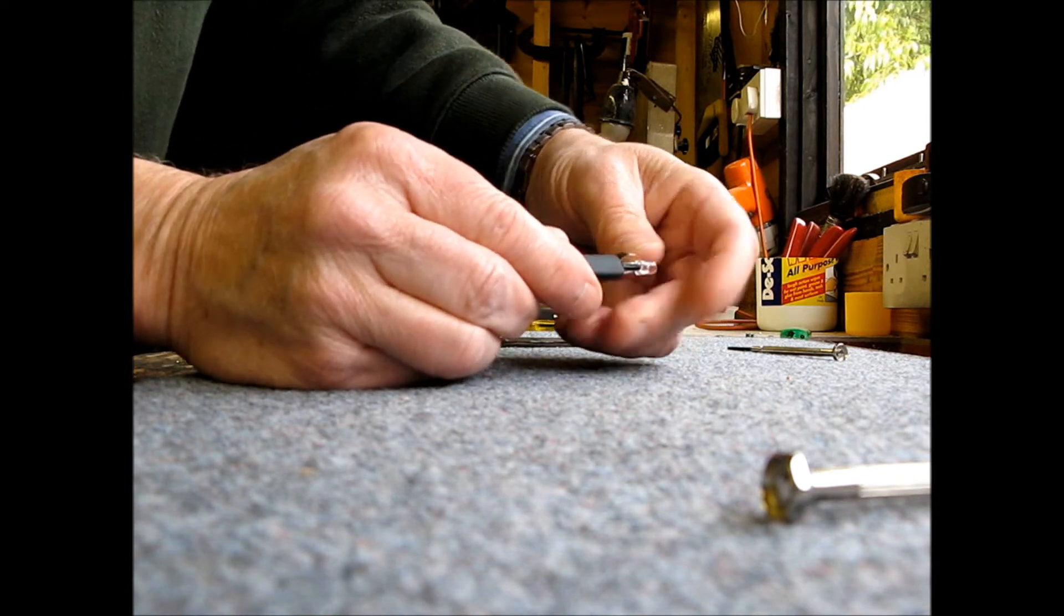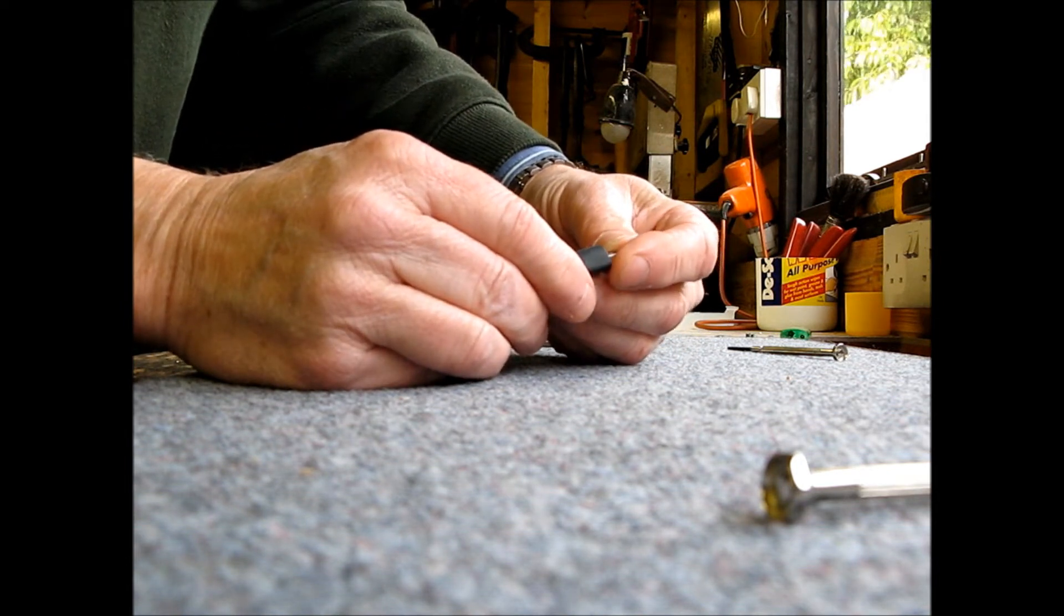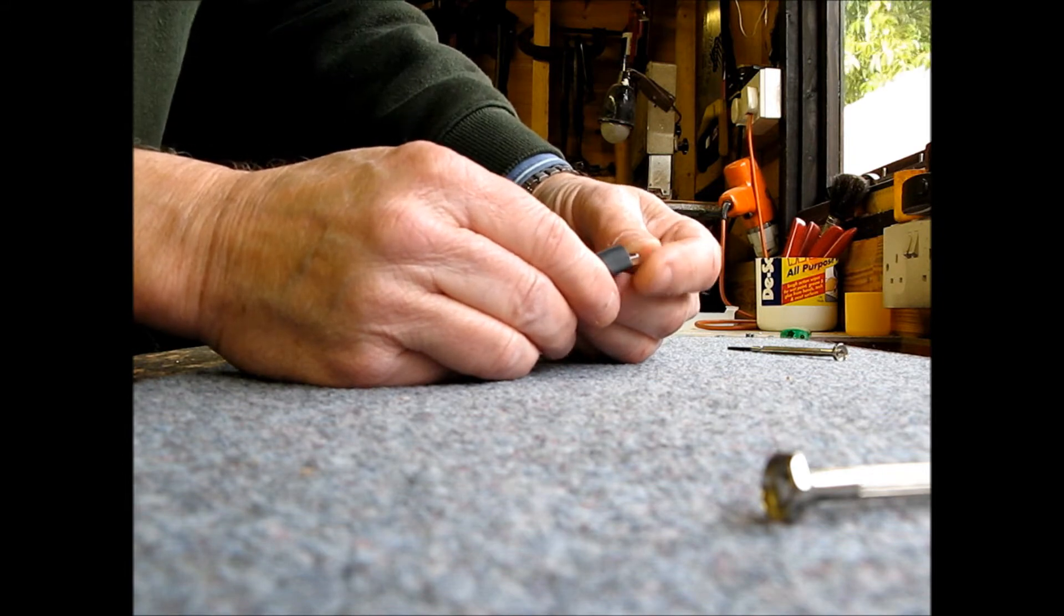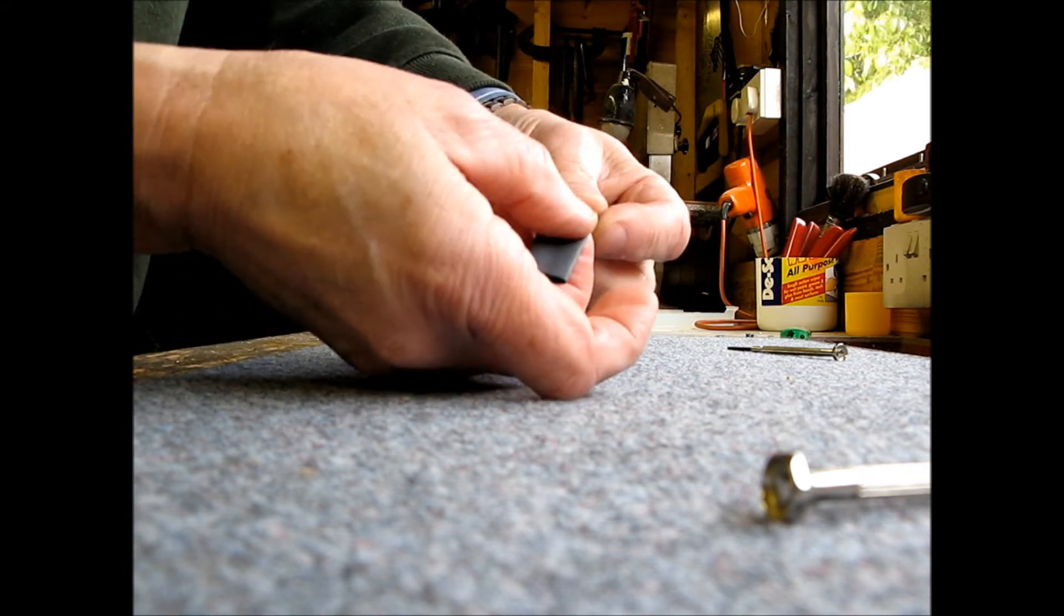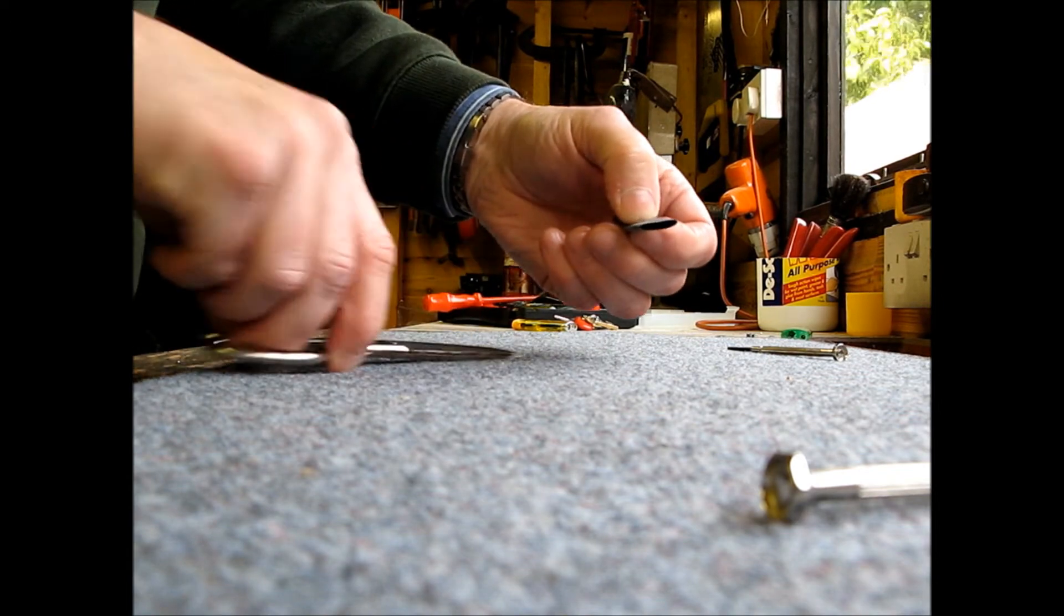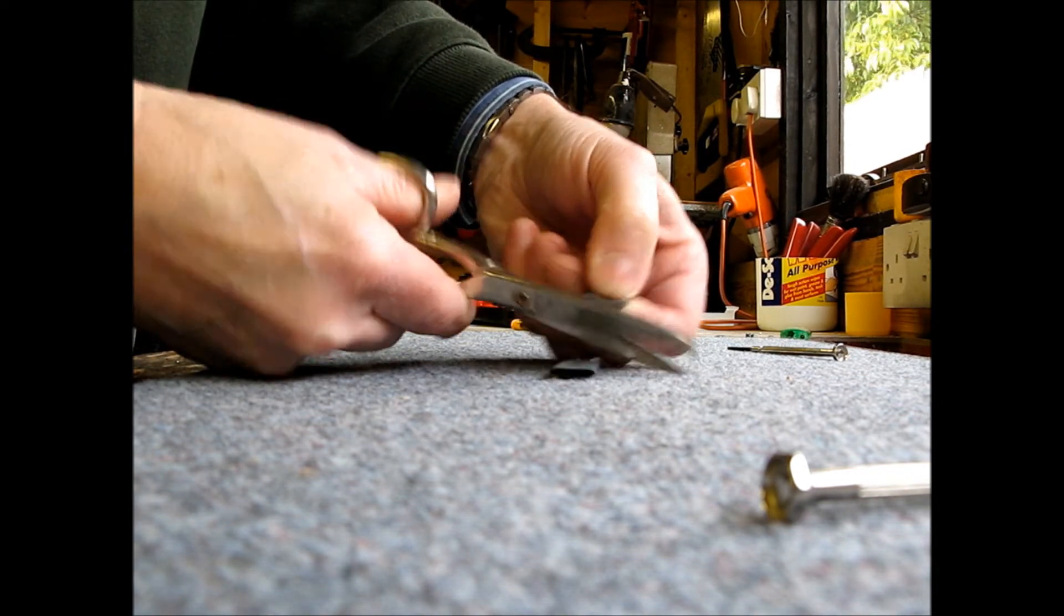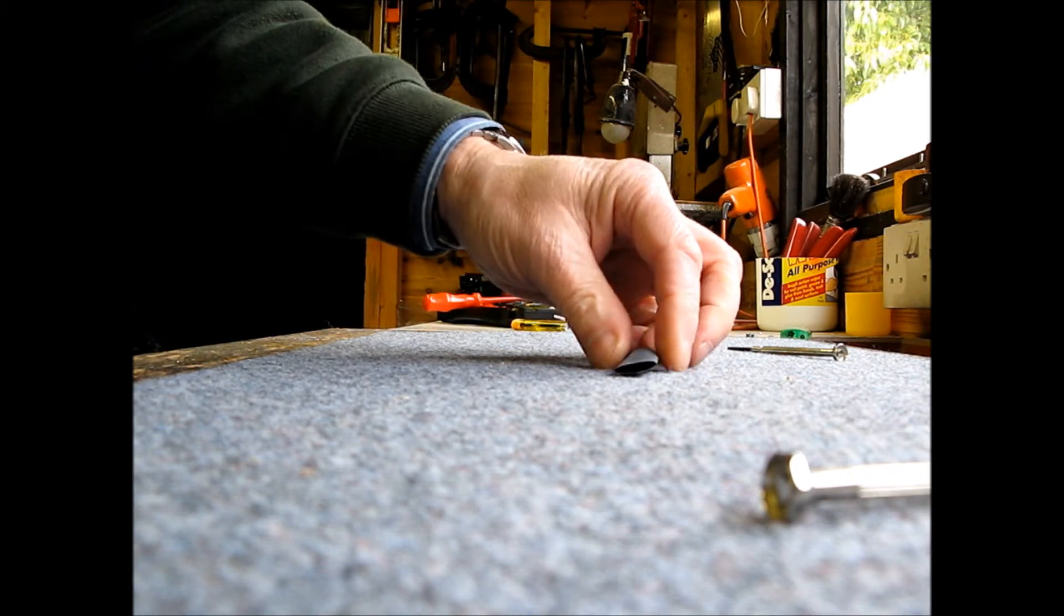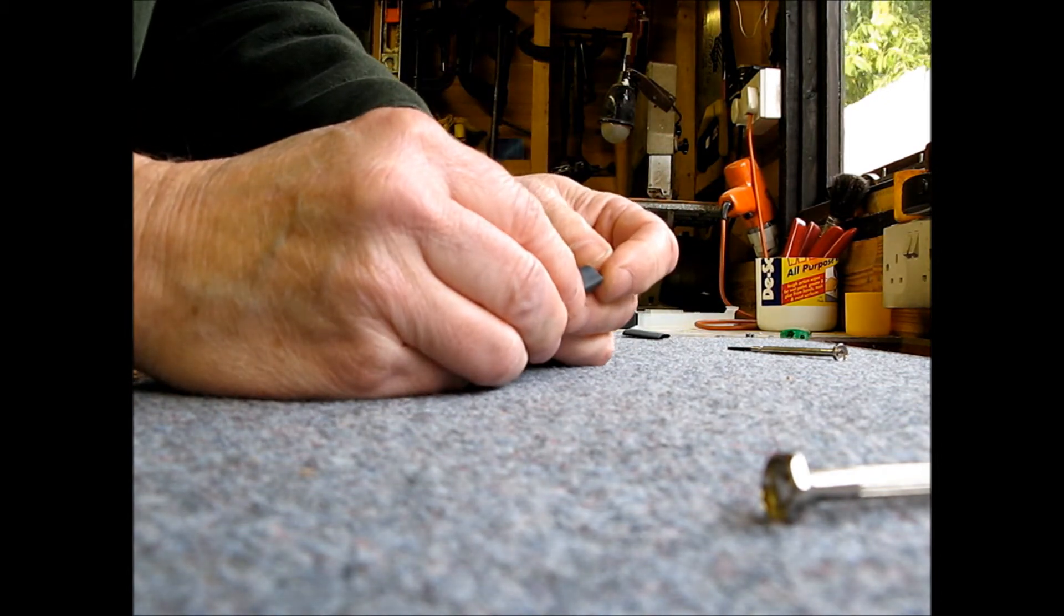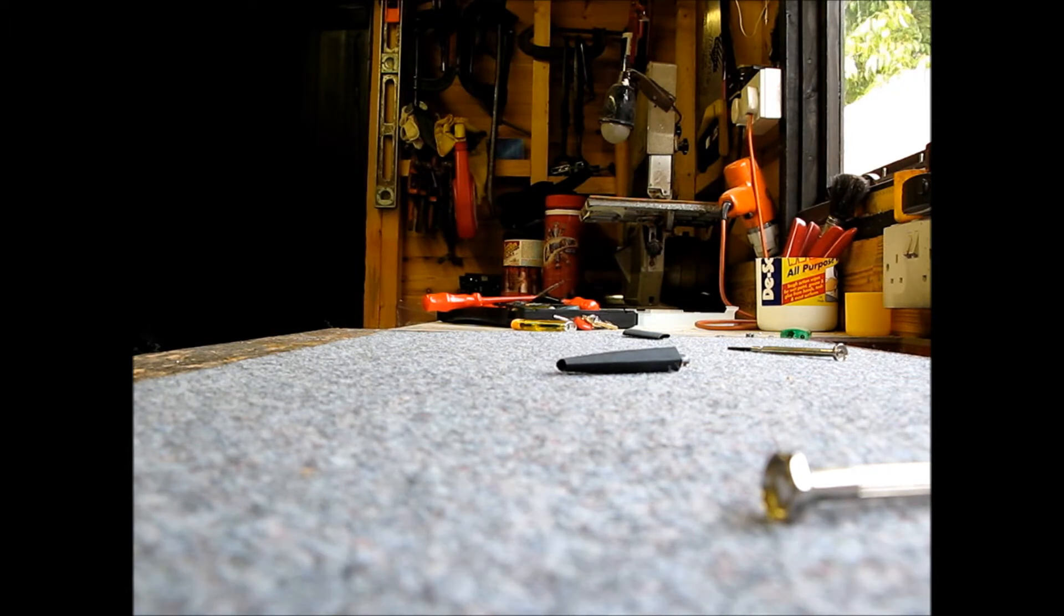Pop it in there so it goes right up about halfway up the LED. Find the end, which is about there, and just cut it off to length. Bob's your uncle. There you go. That's about right. Just about there. Get your hot air gun.